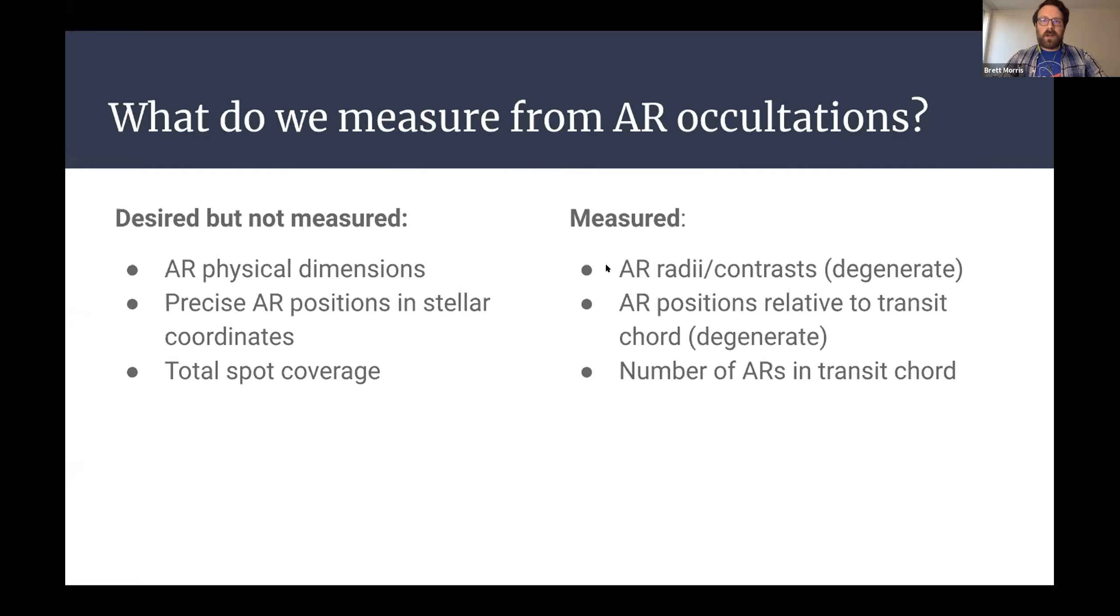Going forward in the rest of this talk, I'm going to use the abbreviation AR to represent active regions because we could be talking about dark star spots or we could be talking about bright facular regions. Both need to be studied in a similar way from opposite contrast perspectives. And so when we study occultations of active regions, what we wish we could measure is often the physical dimensions of the active region. We wish we could know, for example, the radius of a spot and its penumbral and umbral radii. We wish we could know the precise positions on the star in stellar coordinates of where the active region resides. And we wish we could know the total spot coverage or the total number of spots on the star at a time.